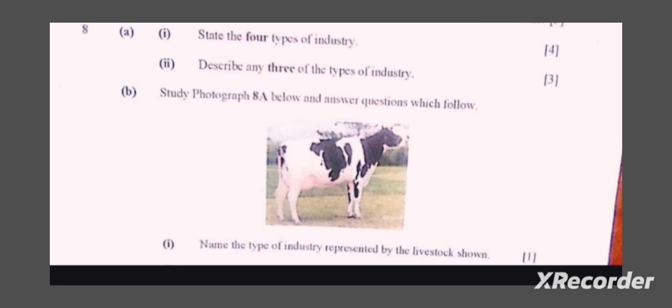Question B says: study photograph 8A below and answer the questions which follow. Name the type of industry represented by the livestock shown. On that particular image, we see a dairy cow. Automatically, this type of industry is primary industry, because primary industry involves the extraction of raw materials from the ground. It includes farming. The first stage of production gives us raw materials such as milk, and leather which can be processed in secondary industry to produce shoes. So, this is primary industry.